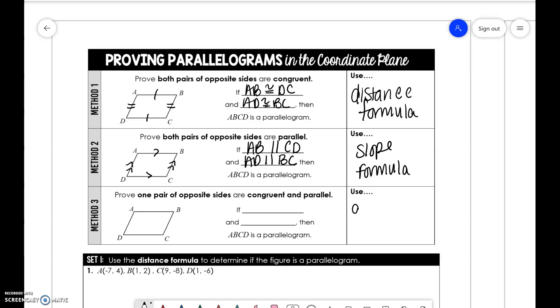The last one is using the distance and slope. You only need to do this for one pair of sides. We can show that AB is congruent to DC and that AB is parallel to DC. What that means is, if those two lines are the same length and the same slope, it automatically follows that these two lines are the same length and the same slope.